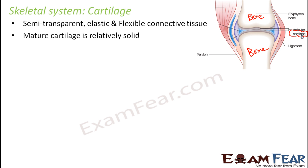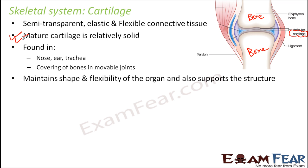Mature cartilage is relatively solid. It is not totally flexible — it has some flexibility as compared to bones, but it is still a solid structure.